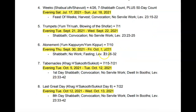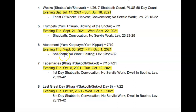Then you have the fall appointed times: Trumpets, Atonement, and Tabernacles with the Last Great Day. Trumpets is around September 21st through September 22nd of 2021 — the blowing of the shofar, the first day of the seventh scriptural month, which is to be a Sabbath and a convocation with no servile work. See Leviticus 23, verses 23 through 25. The Day of Atonement, commonly known as Yom Kippur, is the tenth day of the seventh scriptural month — from the evening of September 30th through October 1st, 2021 — also a Sabbath, a day of fasting. See Leviticus 23, verses 26 through 32.